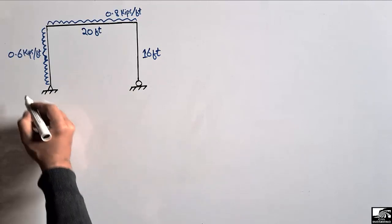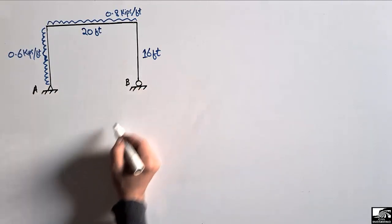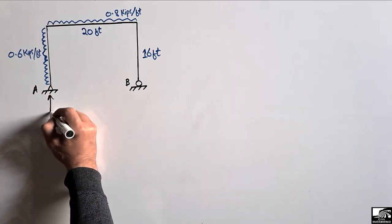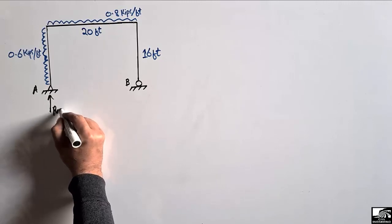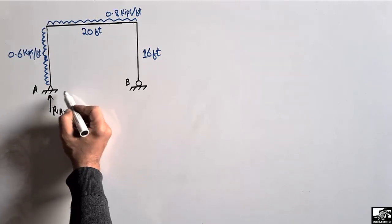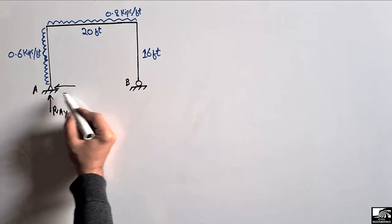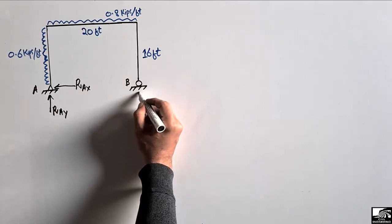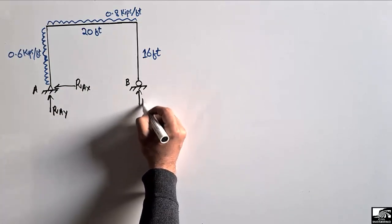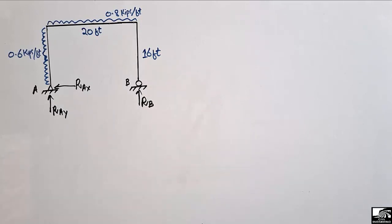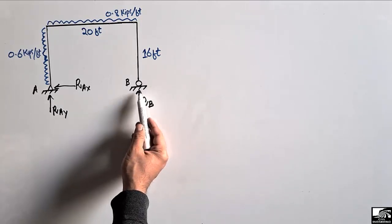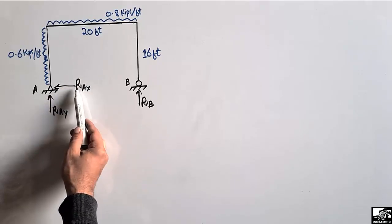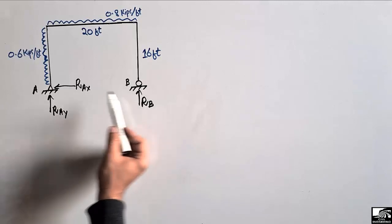We have to find the support reactions. Let's suppose this is support A and this is support B. Support A is a hinge support, so it can resist vertical reaction RAY and horizontal reaction RAX, because a hinge support can take horizontal load as well. The roller support B can only take vertical load RB — a roller support cannot take any horizontal load, so all the lateral load will be taken only by the hinge support.